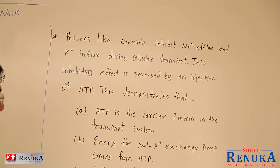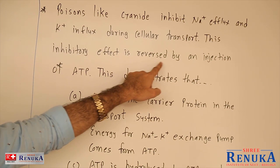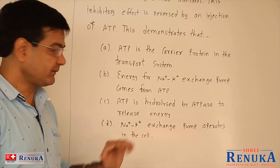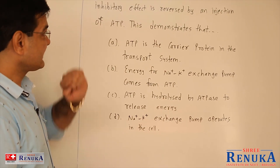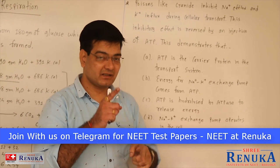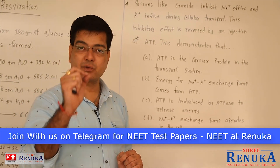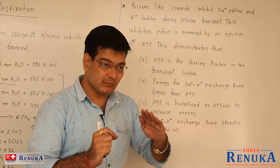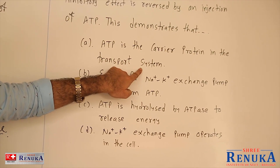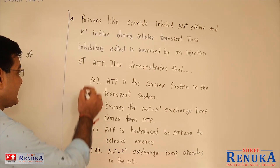Poisons like cyanide inhibit sodium efflux and K+ influx during cellular transport. This inhibitory effect is reversed by an injection of ATP — this demonstrates what? Remember that sodium efflux and K+ influx means it is the sodium-potassium pump, which is an example of active transport. Active transport always requires ATP as it is uphill transport from lower concentration to higher concentration.